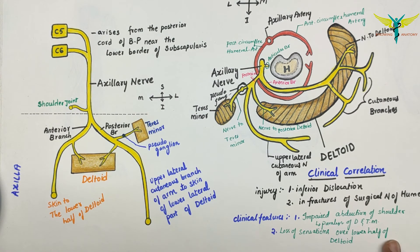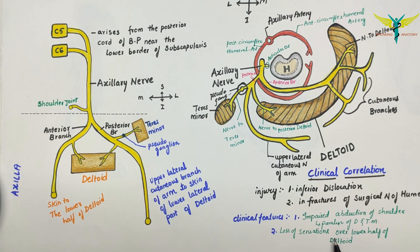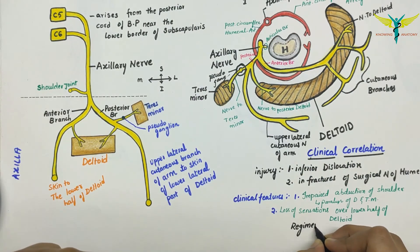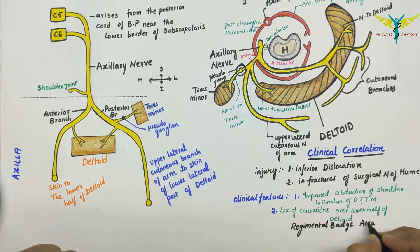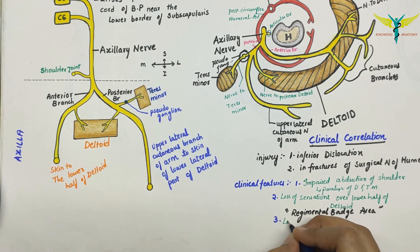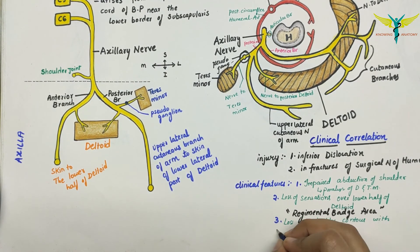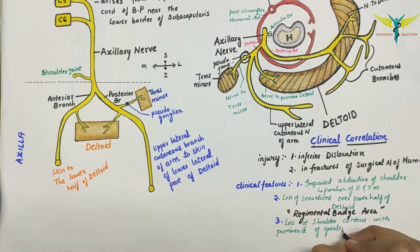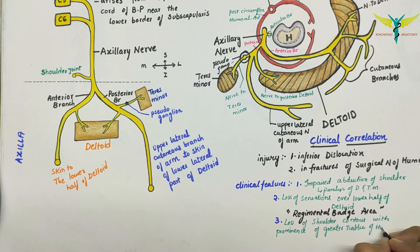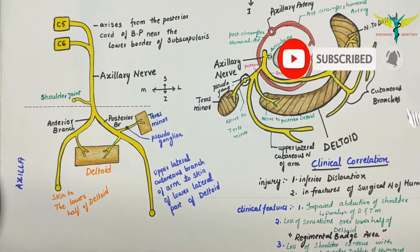Another clinical feature is loss of sensation over the lower half of the deltoid, due to involvement of the upper lateral cutaneous nerve of the arm. The loss of sensation in this area is called the regimental badge area of sensory loss. A third clinical feature is loss of shoulder contour with prominence of the greater tubercle of the humerus, due to wasting of the deltoid muscle.